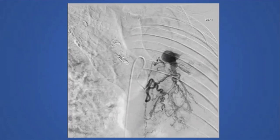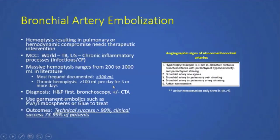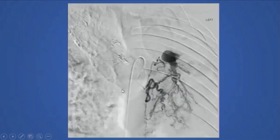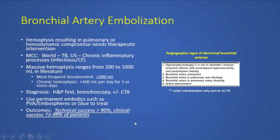The bronchial artery is tortuous and hypertrophied, and we also see an abnormal connection to what looks like the pulmonary vein. We treated this with bronchial artery embolization. Hemoptysis resulting in pulmonary or hemodynamic compromise needs therapeutic intervention. The most common cause worldwide is tuberculosis.